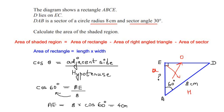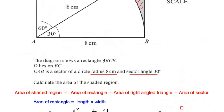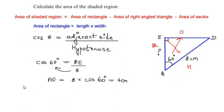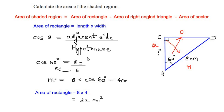We have got the width AE as 4 centimeters. Now we can easily find the area of the rectangle by multiplying the length 8 by the width 4, giving area of rectangle = 8 × 4 = 32 centimeters squared. That's the first part of the calculation.